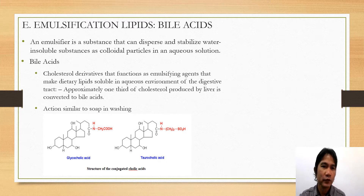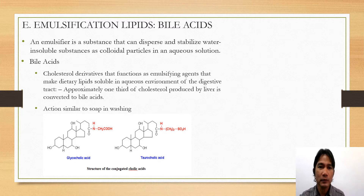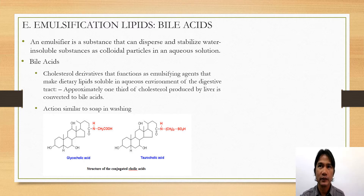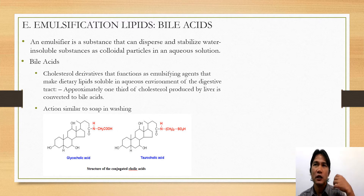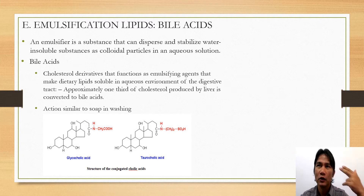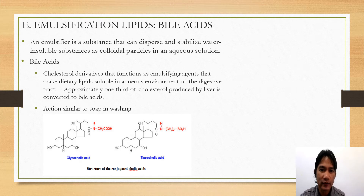Approximately one-third of cholesterol produced by the liver is converted to bile acid. These bile acids act similar to the action of soap. Soap acts as an emulsifier because soap bridges or links the non-polar dirt on the surface of the skin and makes the dirt soluble to water. However, there are two common bile acids: glycocholic acid and taurocholic acid. Take note that these bile acids are built on the steroid nucleus.